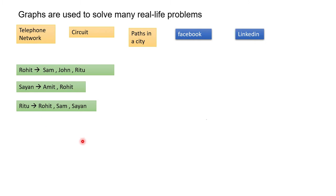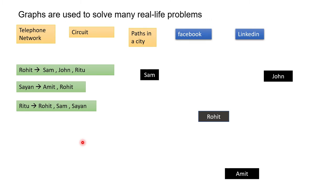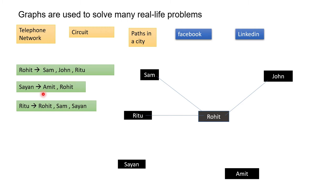First, I will create a node out of each person — Rohit, John, Amit, Sam, and Ritu — and then connect them if they have a relationship. Rohit has friendship with Sam, so they are connected. Rohit has friendship with John, so they are connected. Ritu and Rohit are connected. Sam has friendship with Amit. Sam has friendship with Rohit also. Ritu has friendship with Rohit, Sam, and Sam — Ritu and Rohit are already connected. Then Ritu connects with Sam and Ritu connects with Sam also. So now their full structure is ready — this is their friendship graph.